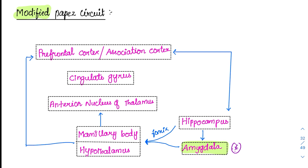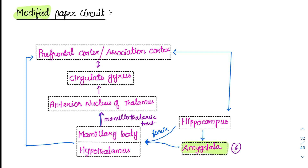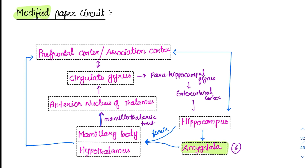Inside this circuit, there is another group of circuits. From the mammillary body, through the mammillothalamic tract, it goes to the anterior nucleus of thalamus. From there, it goes to the cingulate gyrus, and from the cingulate gyrus it goes to the prefrontal cortex — this connection is also bidirectional. From the cingulate cortex, internal connections include the para-hippocampal gyrus, and through the para-hippocampal gyrus it goes to the entorhinal cortex, and finally back to the hippocampus.